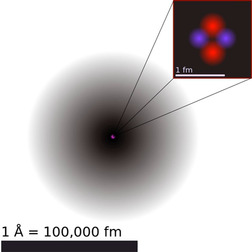The atomic radius of a chemical element is a measure of the size of its atoms, usually the mean or typical distance from the center of the nucleus to the boundary of the surrounding cloud of electrons. Since the boundary is not a well-defined physical entity, there are various non-equivalent definitions of atomic radius. Three widely used definitions of atomic radius are van der Waals radius, ionic radius, and covalent radius.